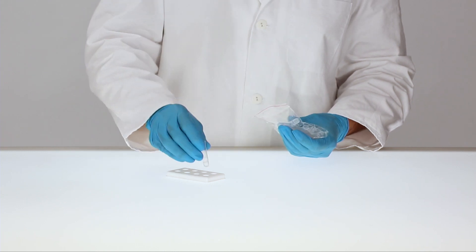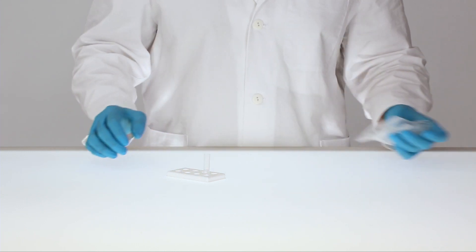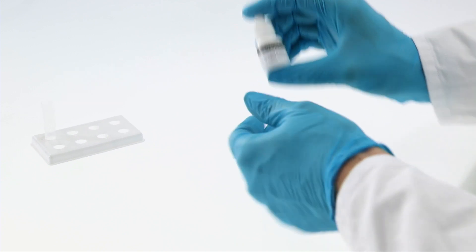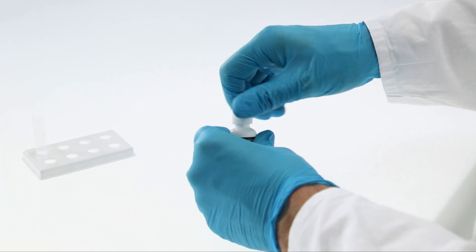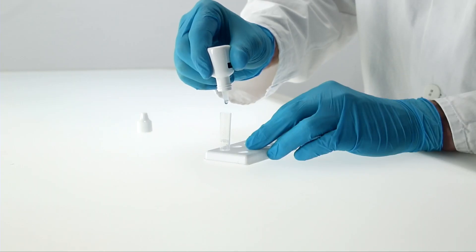Place a clean extraction tube into the reagent holder. Gently mix the buffer by carefully swiveling the bottle. Make sure to hold the buffer bottle vertically and add 10 drops to the extraction tube.